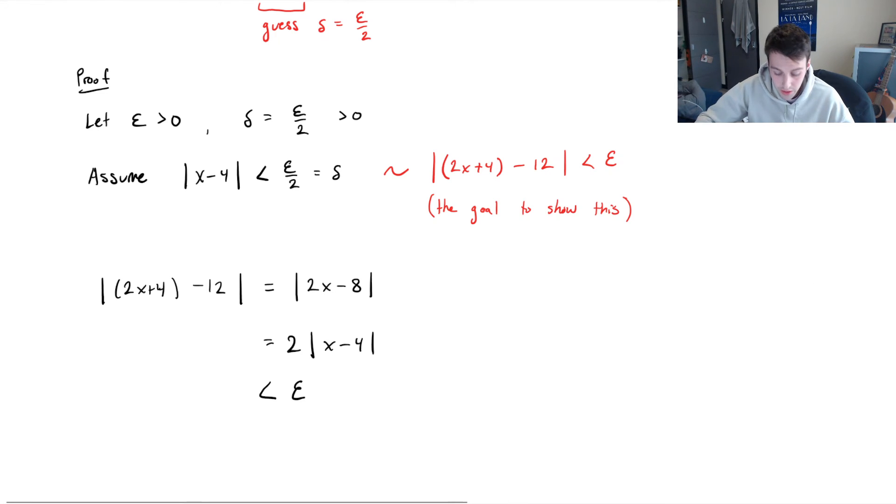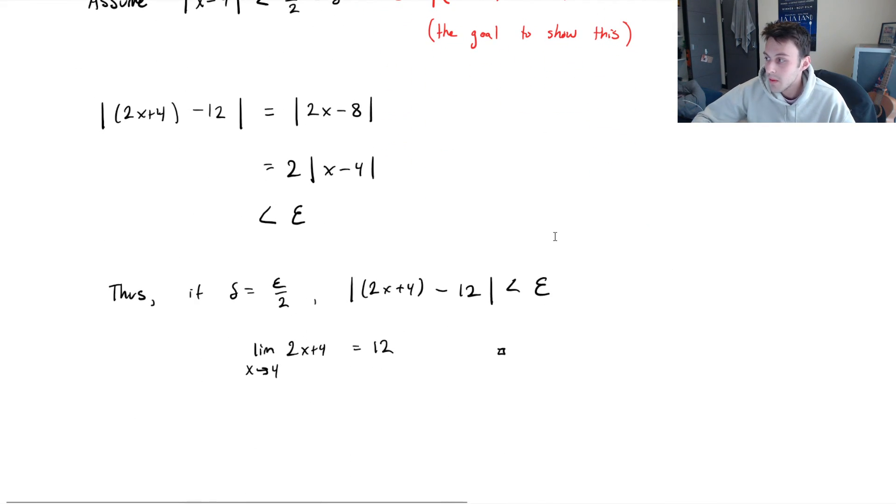So we're actually done the limit. So I guess we can write to conclude things. Thus, if delta is equal to epsilon over 2, then what we showed was that 2x plus 4, that function, minus the limit L, then this is going to be less than epsilon. Or in other words, the limit as x approaches 4 of 2x plus 4 is equal to 12. And that is the end of the proof. Hope that makes a little bit more sense.